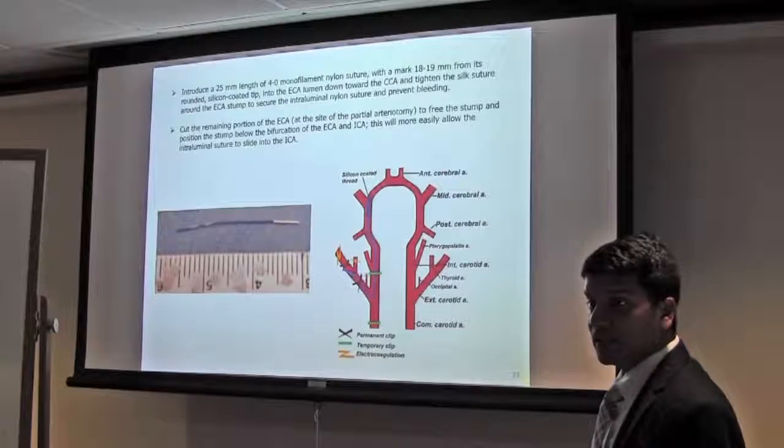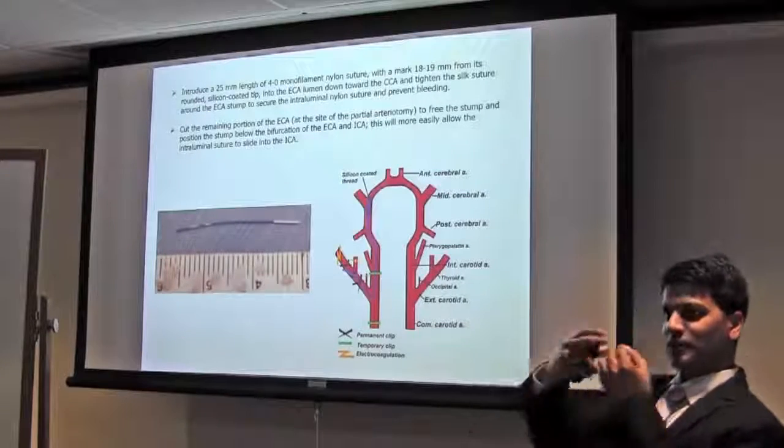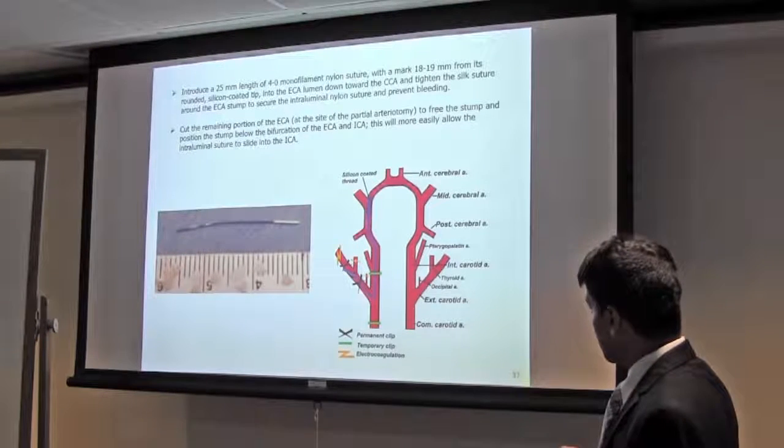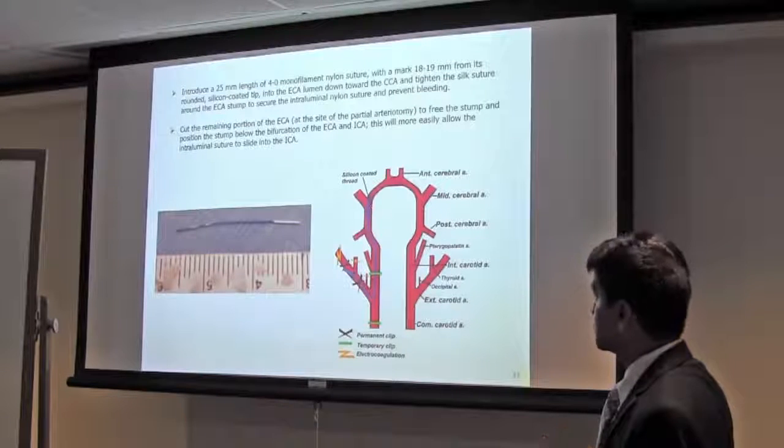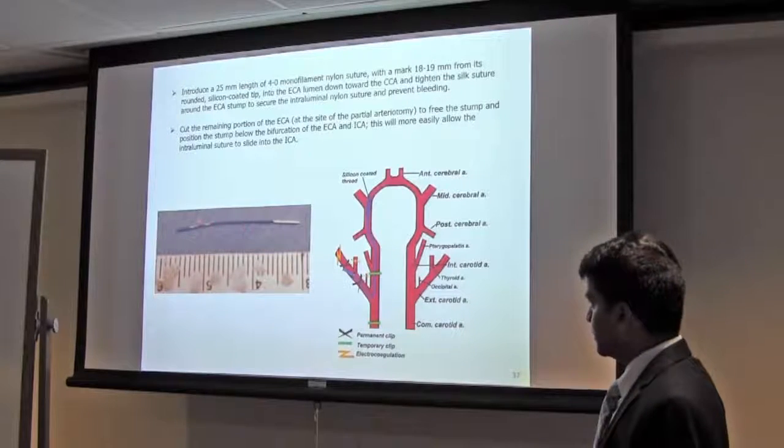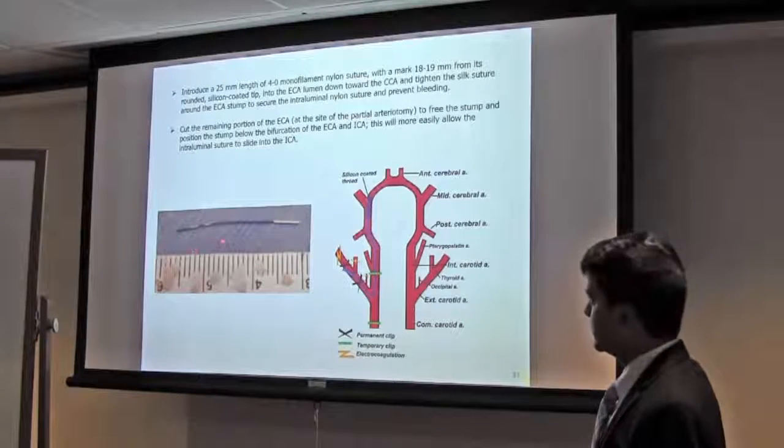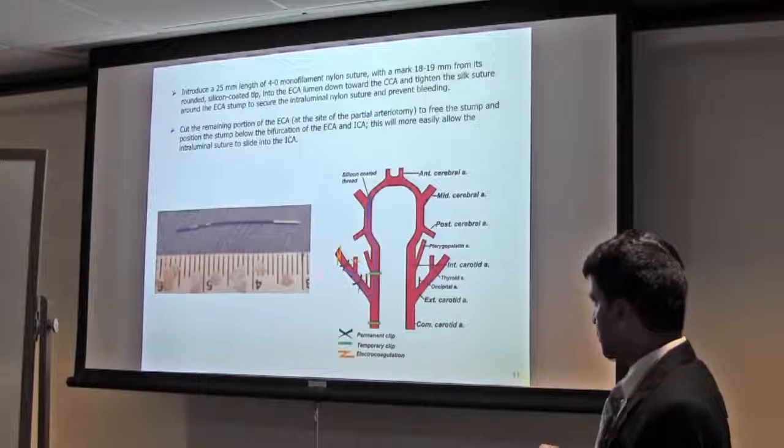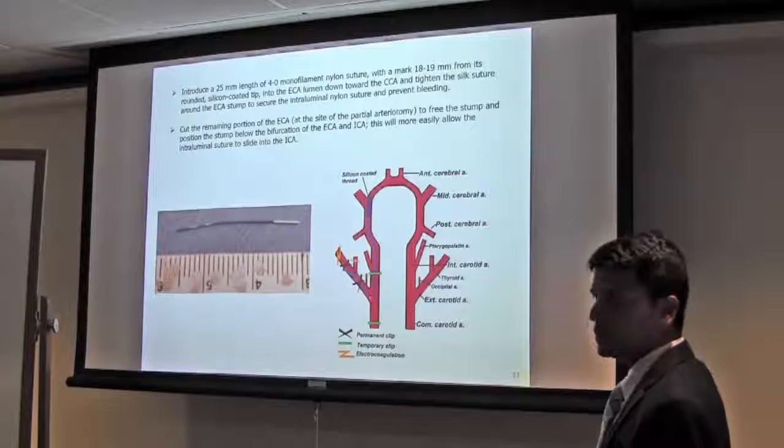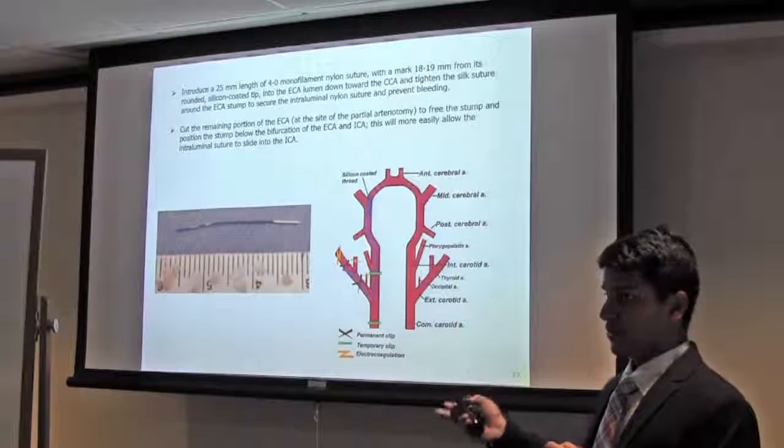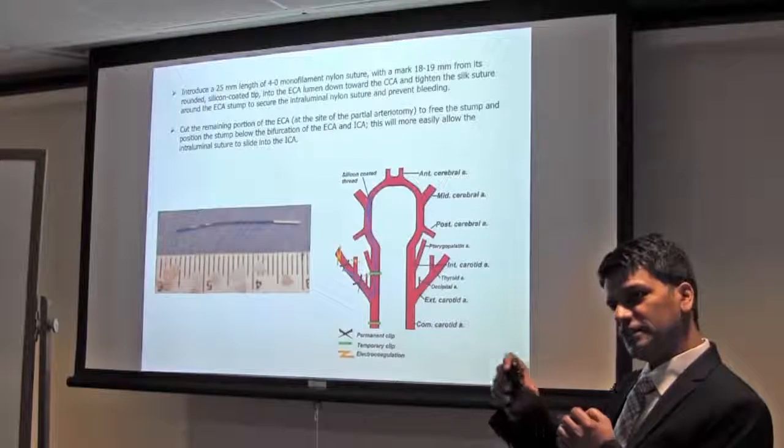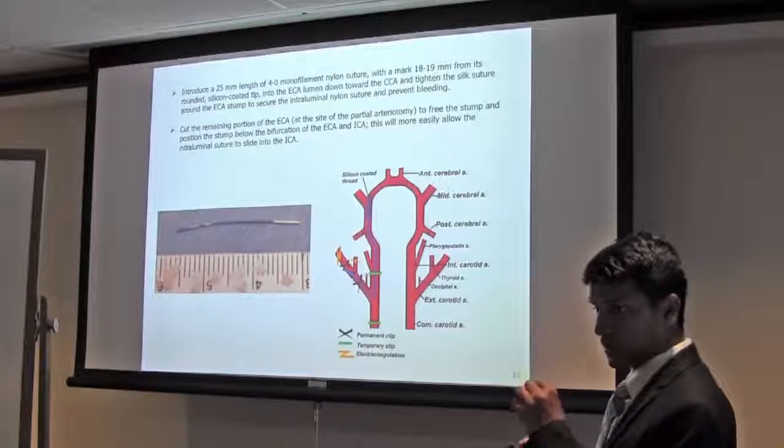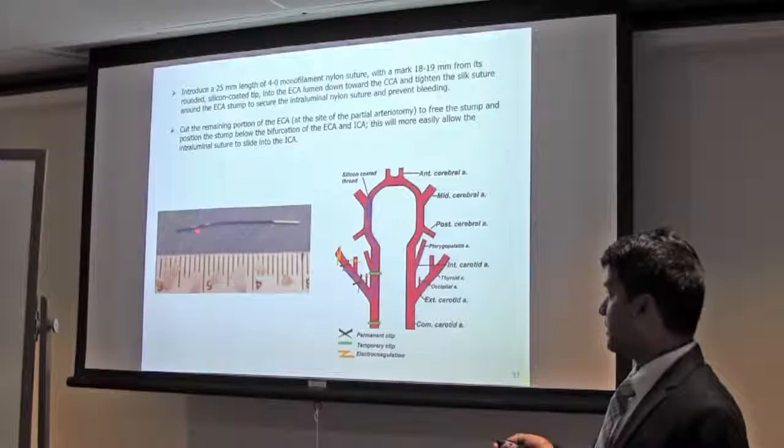So that's how you get around that extreme angle. After cutting, you can mobilize that one. Then you can insert the filament until the MCA origin. We make a mark in the silk suture, that is around 18mm in case of rat. When this mark goes after the bifurcation, you know they're going to the perfect position. Also, you will feel some resistance when it comes here because it is narrowing down the interior. You will feel the resistance. In case of mice, it will be 8mm.